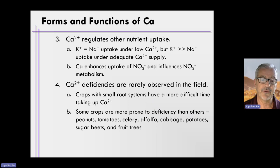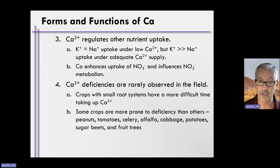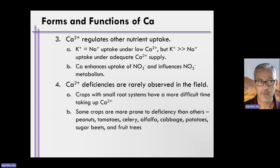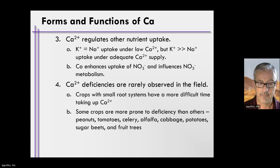Some crops are simply more prone to calcium deficiencies — peanuts and tomatoes, for example, really stand out in that regard.